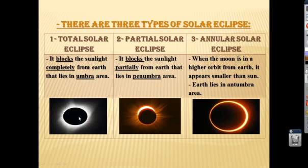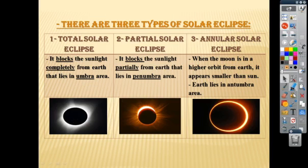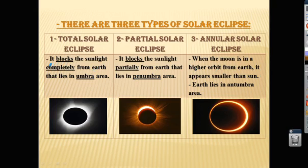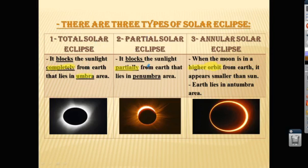To summarize: in a total solar eclipse, the moon blocks the sunlight completely. In a partial solar eclipse, the moon blocks the sunlight but only partially. In an annular solar eclipse, the moon is in a higher orbit of the earth. Total solar eclipse occurs in the umbra area, partial solar eclipse in the antumbra area, and annular solar eclipse also in the antumbra area.